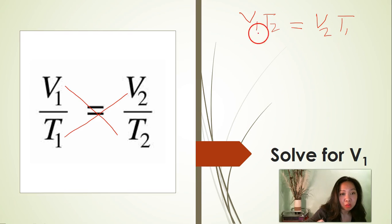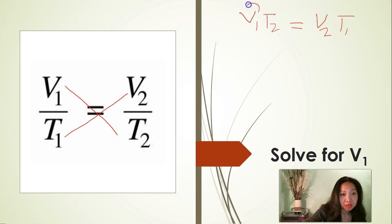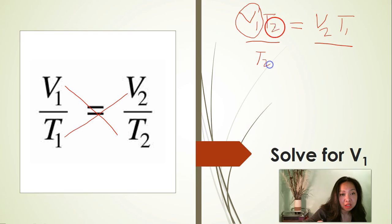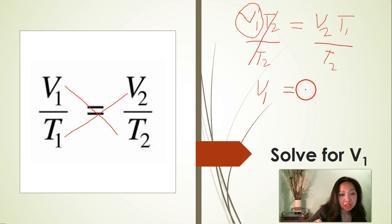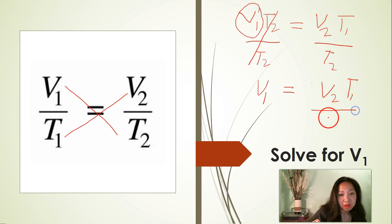Now that we got rid of the denominators, we can solve for V1. Isolate V1 by dividing both sides of the equation by T2. Cancel T2. That leaves us with V1 is equal to V2 times T1 divided by T2.